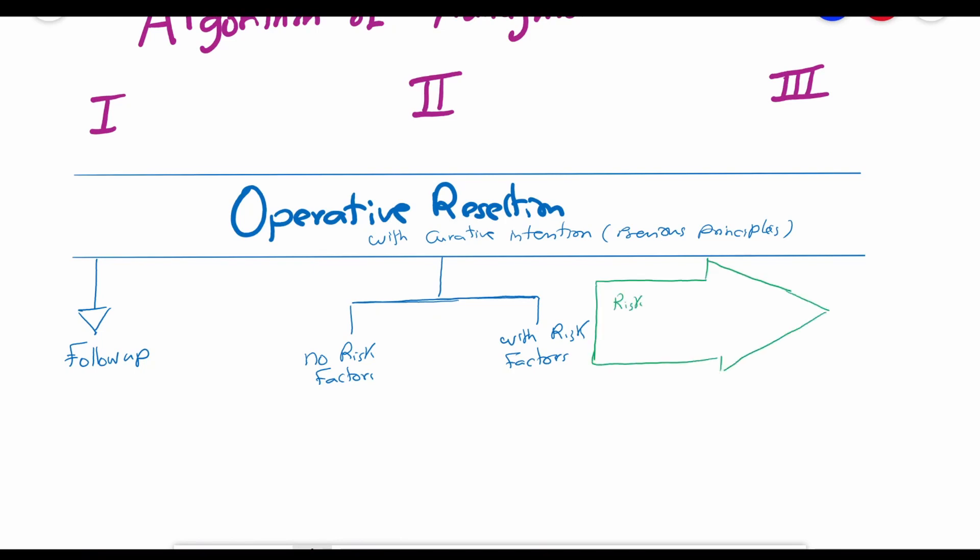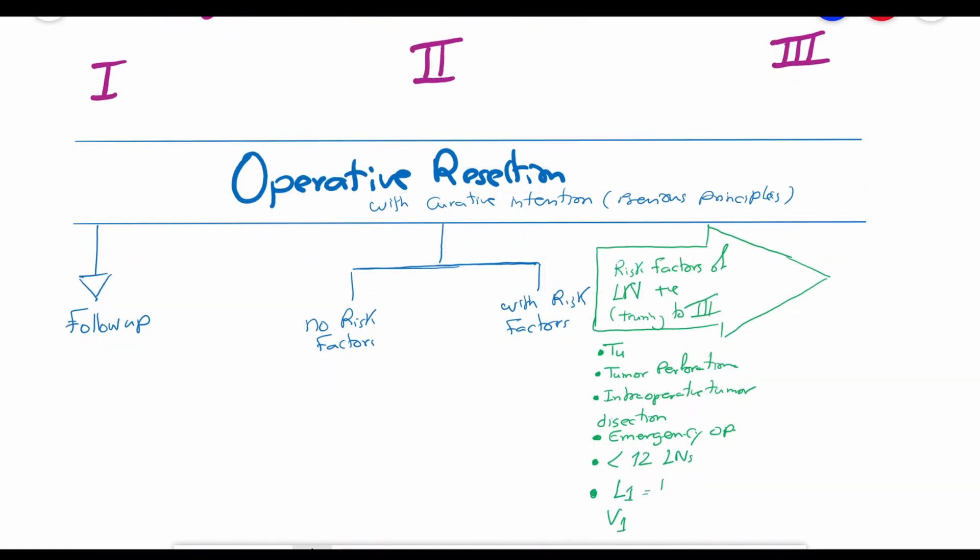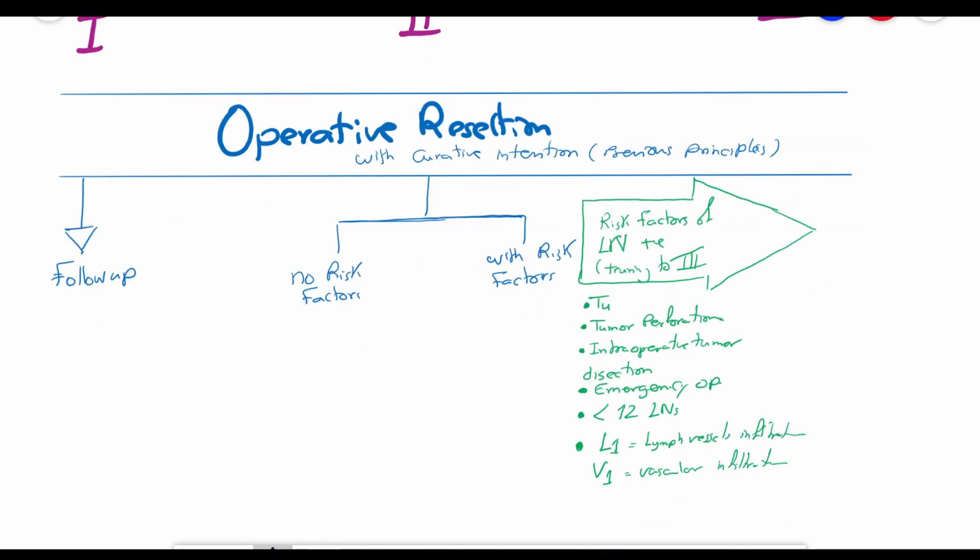Here by risk factors, we mean factors that can indicate the presence of undetected lymph node infiltration, which renders the staging of the tumor from stage 2 to stage 3. These factors are a T4 tumor, a tumor perforation preoperatively, an intraoperative tumor dissection, emergency operations, less than 12 lymph nodes harvested in the specimen, the presence of lymph vessel infiltration L1, or V1, which is vascular infiltration.